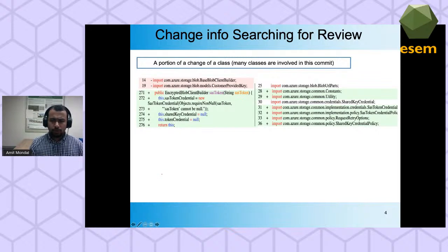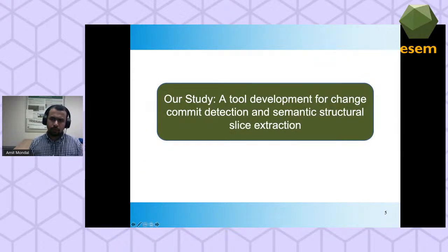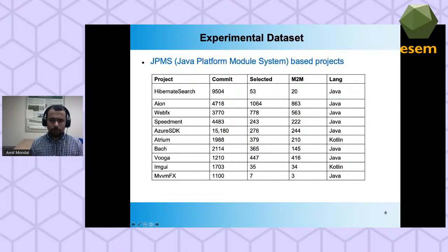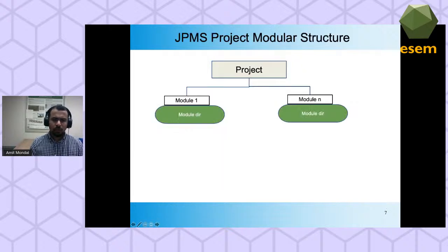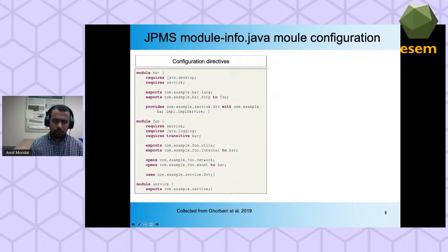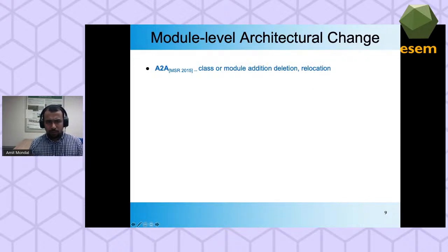Architectural information and structure are essential for this review process. Architectural design is reviewed for individual requirements, issues, and even individual commits, with multiple reviewers reviewing based on complexity. Our study focus is to develop a tool for architectural change commit detection and then semantic structural slice extraction. For our preliminary study we selected 10 open-source projects developed from Java Platform Module Systems, using two languages — Java and Kotlin.